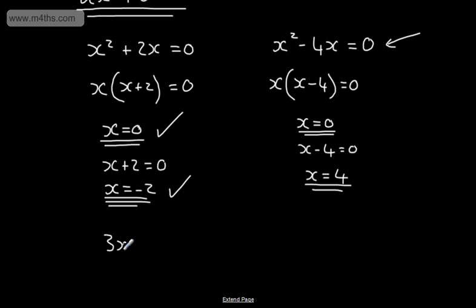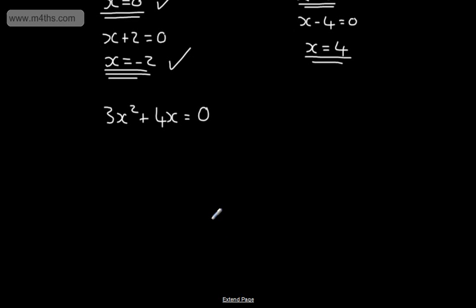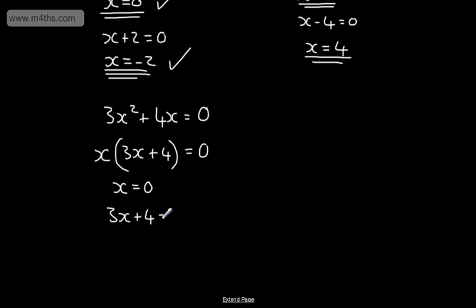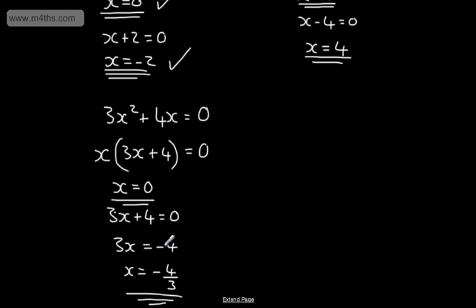Let's say we've got 3x squared plus 4x is equal to 0. We can factor out the x, giving us x times 3x plus 4 is equal to 0. So either x is equal to 0, or 3x plus 4 is equal to 0. Subtracting 4 from both sides and dividing by 3 gives x is equal to minus 4 thirds. So we simply divide the constant by the coefficient and change the sign.